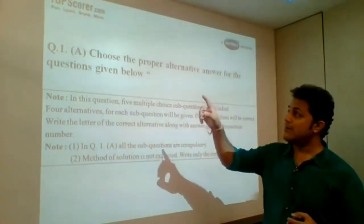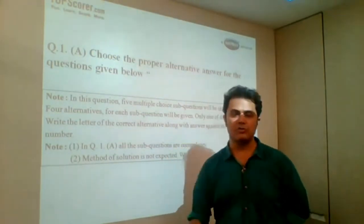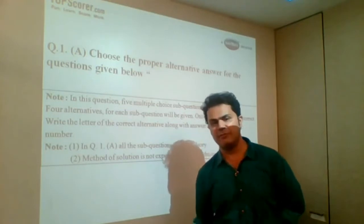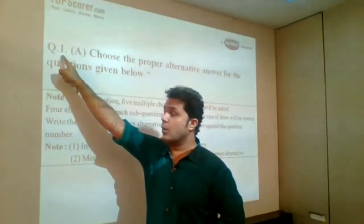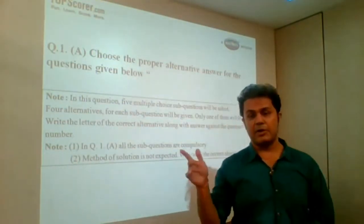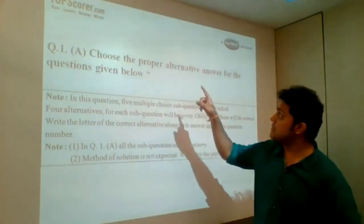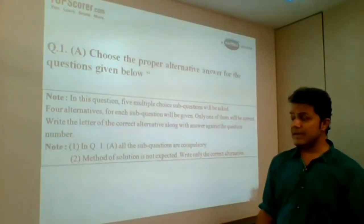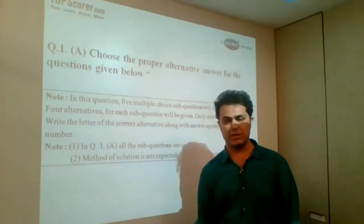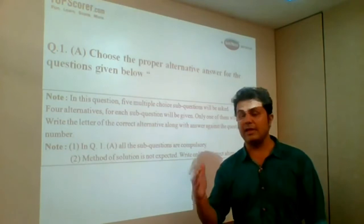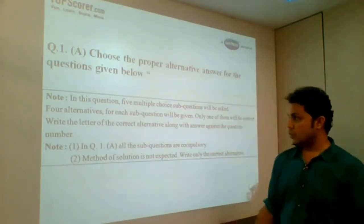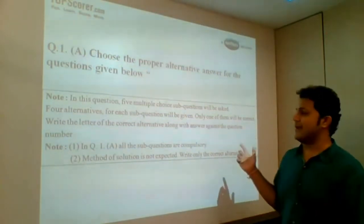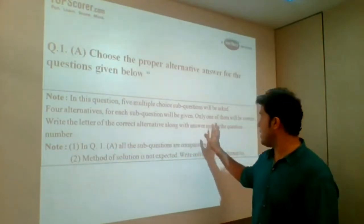Now question number 1 basically will have all 1 mark questions. Question number 2 will have all 2 mark questions. Question number 3 will have all 3 mark questions. Question number 4 will have 4 mark questions. Lastly, question number 5 will have 5 mark questions. So the question number will decide the weightage of each question in that particular part. Like question number 1A, the question is choose the proper alternative answer for the questions given below. They are going to ask you MCQs wherein they will be giving you 5 questions and 4 alternatives for each question.